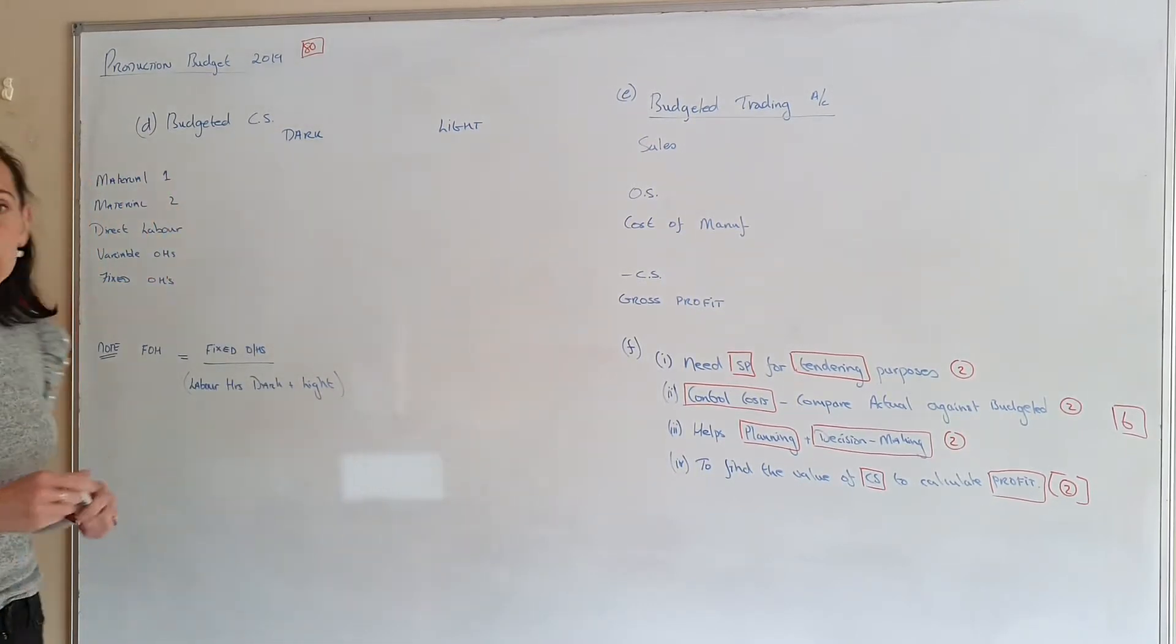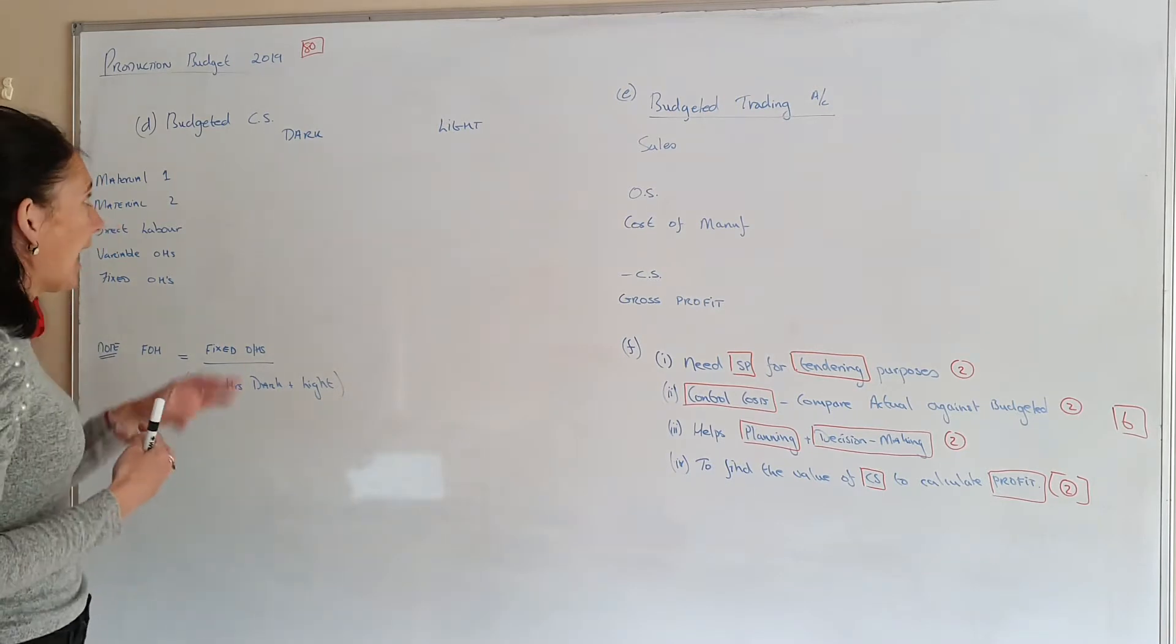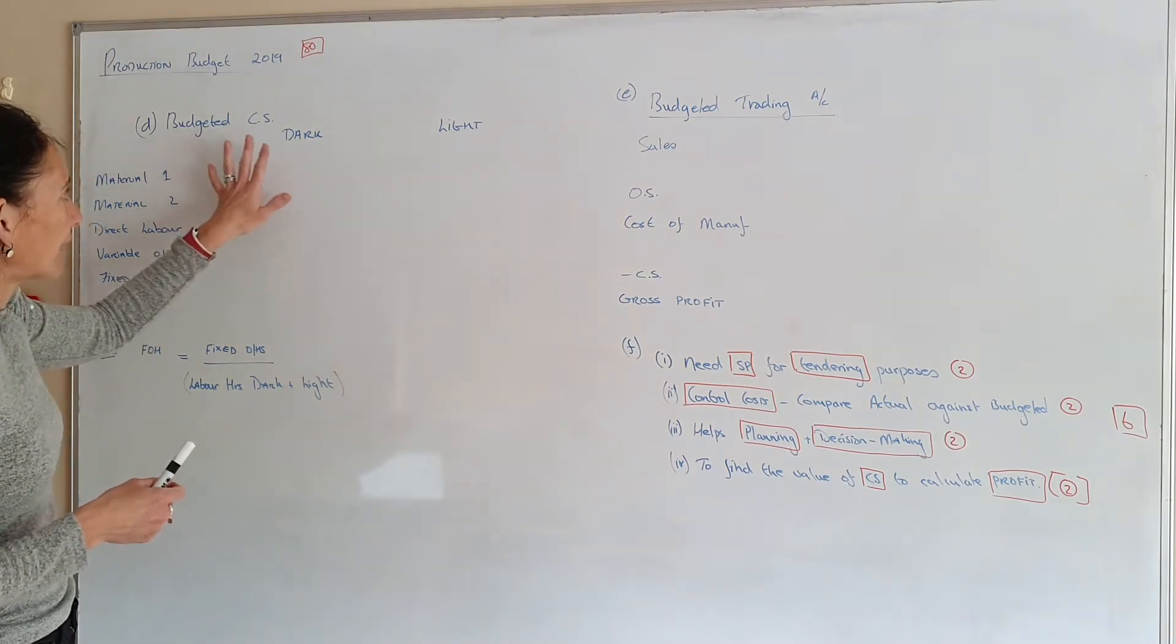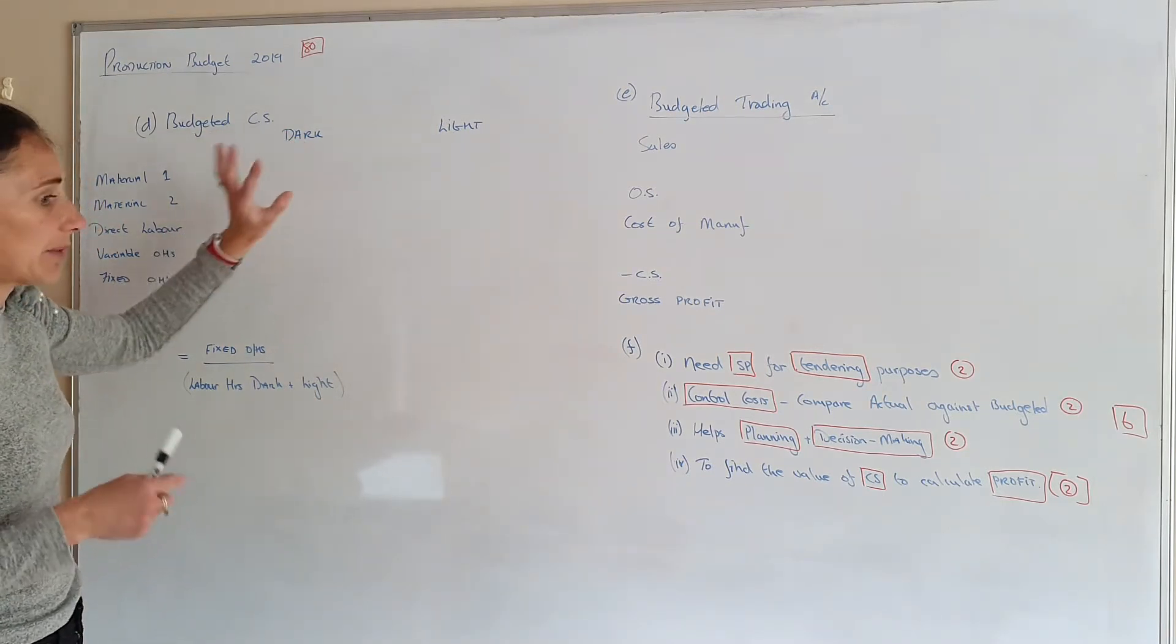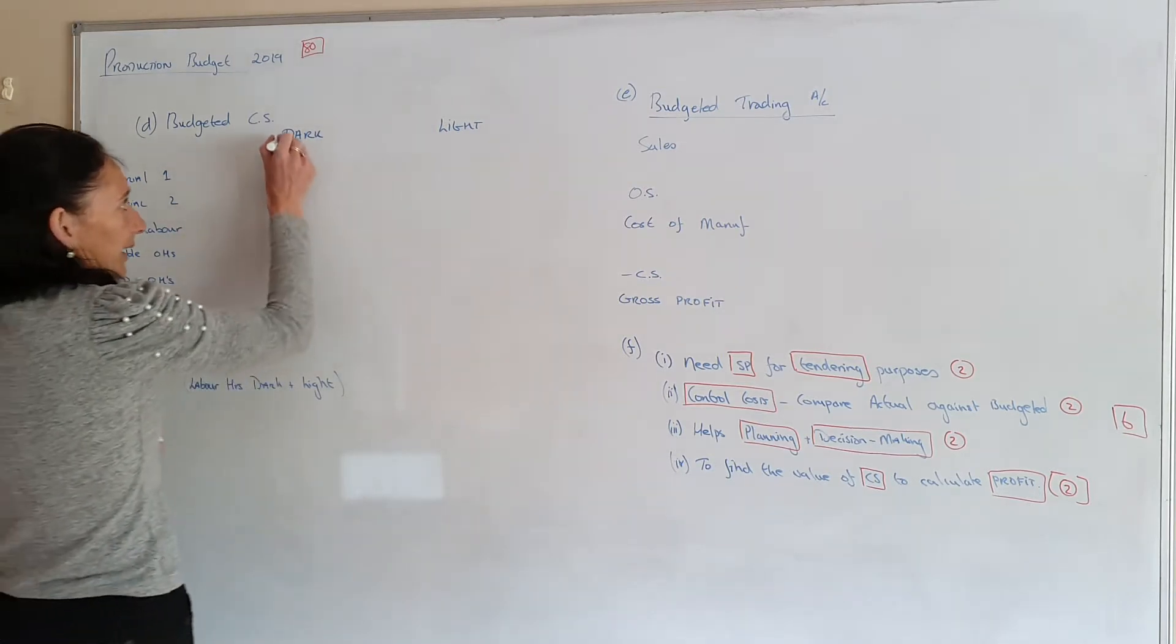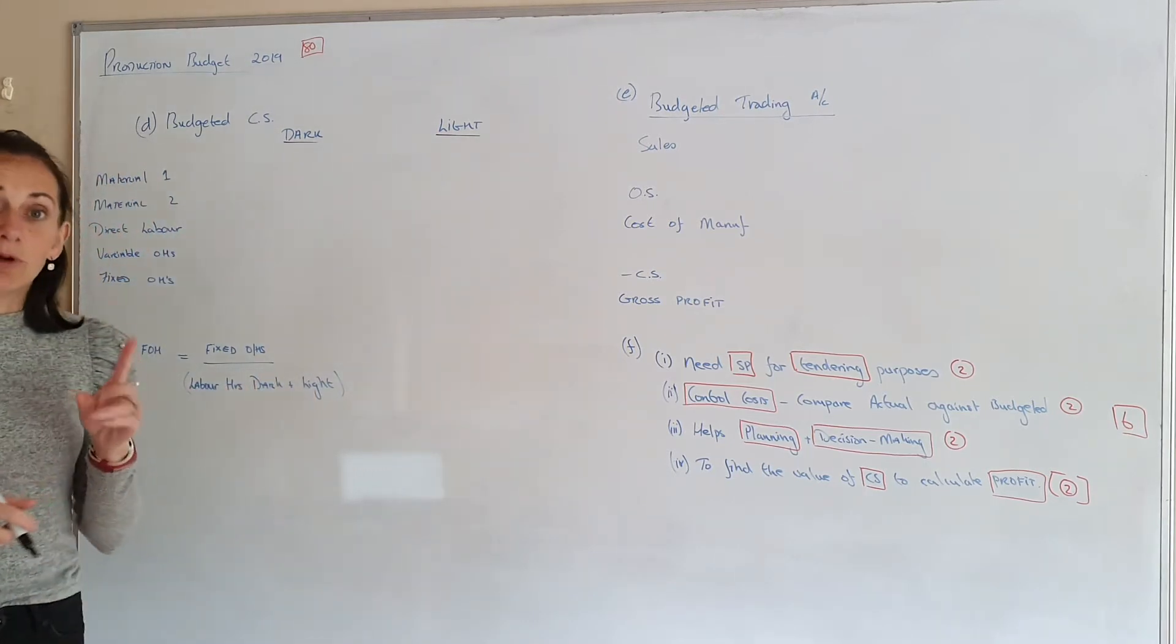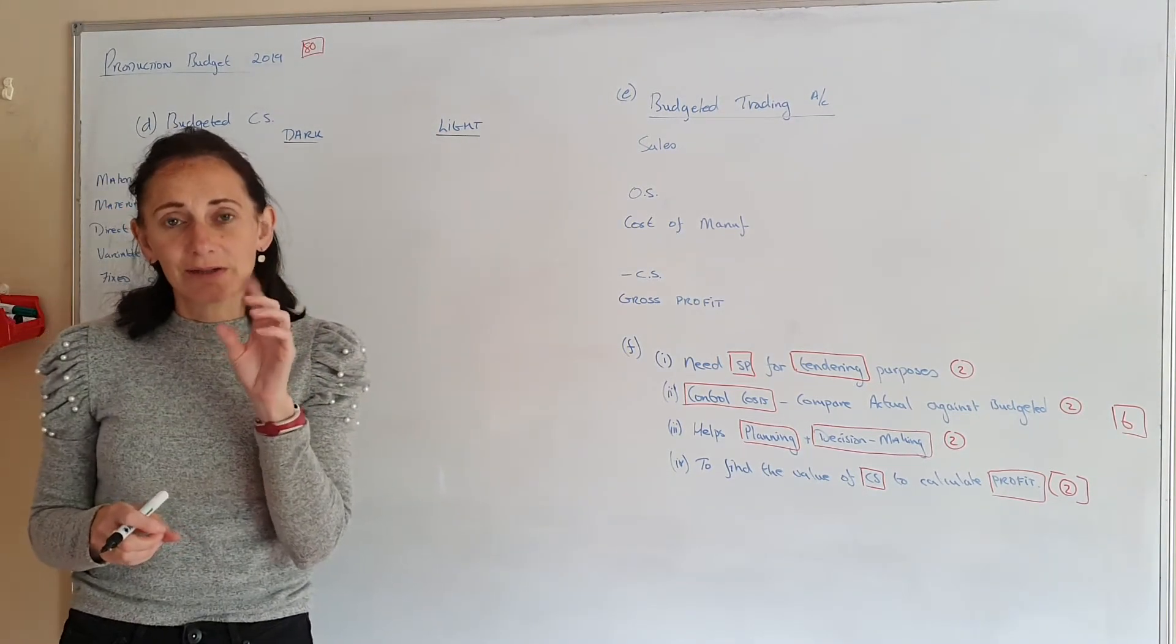So in this they want you to calculate the budget of closing stock. This is a new thing that they've been asking. When you're trying to work out the value of closing stock, remember you have two products that you're pricing. You have dark and light, so that's why they're there. And you're going to figure out how much material one unit. So you're doing this for one unit.